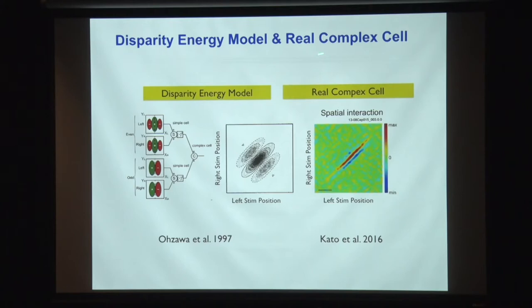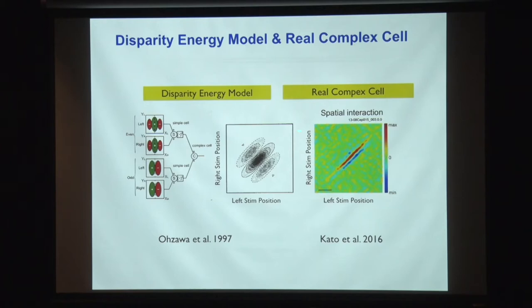The prediction from the disparity energy model shows a circular envelope in the left-right interaction map. But the real neuron is very elongated along the diagonal, which is very unusual. The depth axis goes from bottom right to top left as you go from near to far. We thought something must be done to fix this disparity energy model insufficiency.